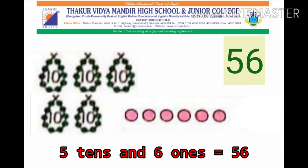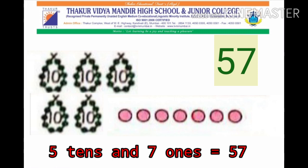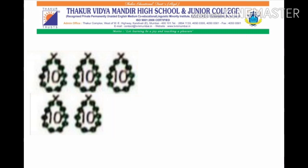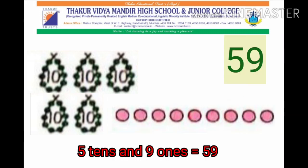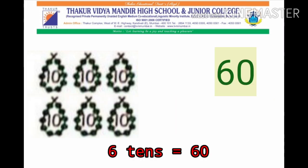5 tens and 6 ones is equal to 56. 5 tens and 7 ones is equal to 57. 5 tens and 8 ones is equal to 58. 5 tens and 9 ones is equal to 59. 6 tens is equal to 60.